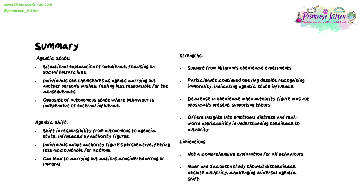In summary, the agentic state is a situational explanation of obedience, focusing on social hierarchies. It is where individuals see themselves as agents carrying out another person's wishes, feeling less responsible for the consequences. The opposite of this is an autonomous state where behaviour is independent of external influence. An agentic shift can take place — a shift in responsibility from an autonomous to an agentic state, influenced by authority figures. Individuals adopt the authority figure's perspective, feeling less accountable for their actions, and it can lead to carrying out actions considered wrong or immoral.